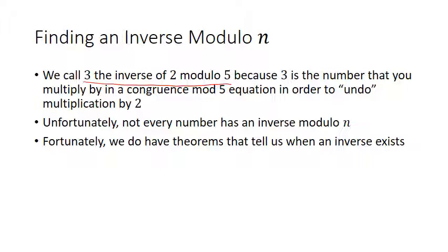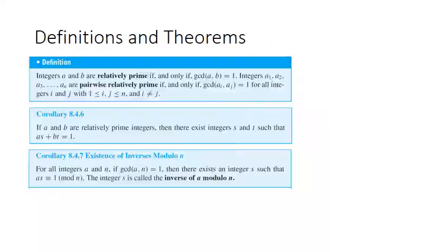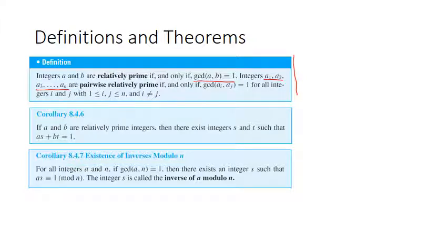Unfortunately, not every number has an inverse modulo n, but we have theorems that tell us when those inverses exist. First we need the concept of relatively prime: integers A and B are called relatively prime if and only if their GCD is equal to 1, meaning A and B do not share any factors. You can also define pairwise relatively prime for a list of integers where none of them share any factors with each other.